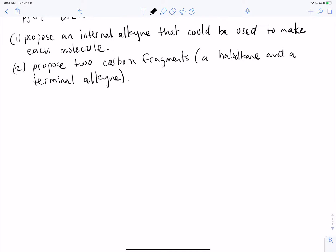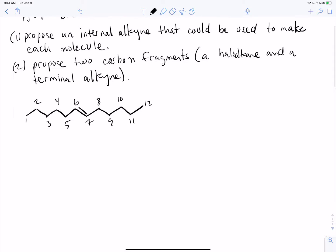Let's just look at the very first one that they have there. I'll try my best not to lose any carbons. I'm just going to go ahead and number this thing. So we've got an alkene internal to this molecule, and they're asking us to propose an internal alkyne that could be used to make it.